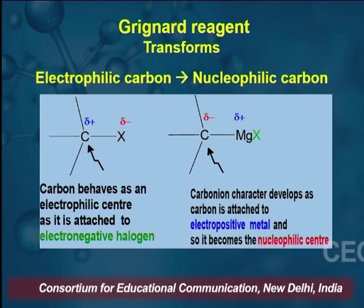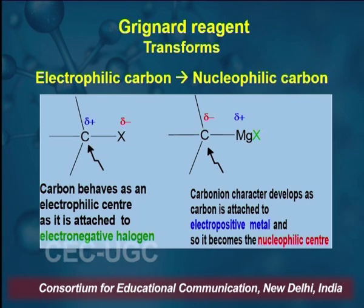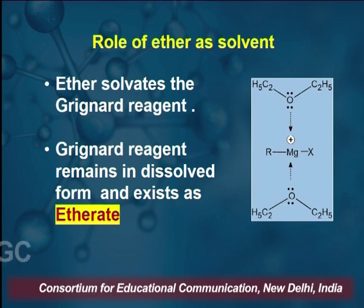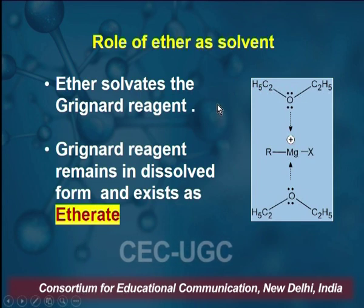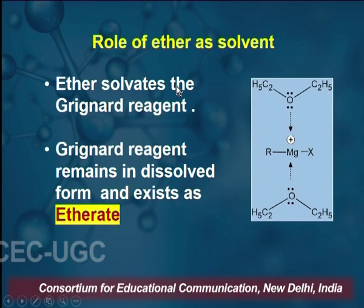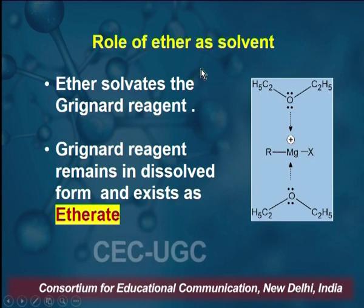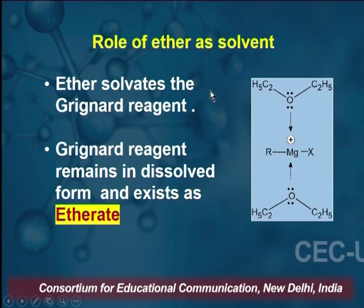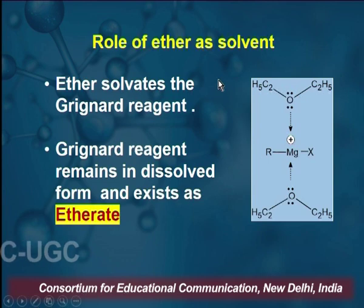The metal is electropositive, so it basically pushes the electrons of the bond towards carbon, making it a nucleophilic carbon. Regarding the role of solvent, Grignard Reagent is prepared in ether. A simple example is diethyl ether. Ether is a very suitable solvent because it results in the formation of etherates, solvates the Grignard Reagent, and keeps it in solution form.